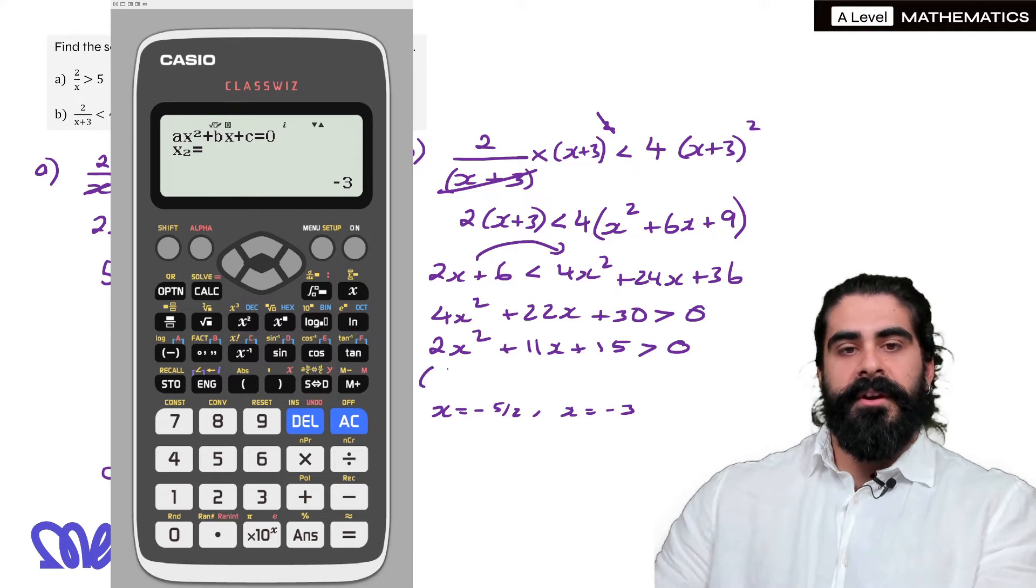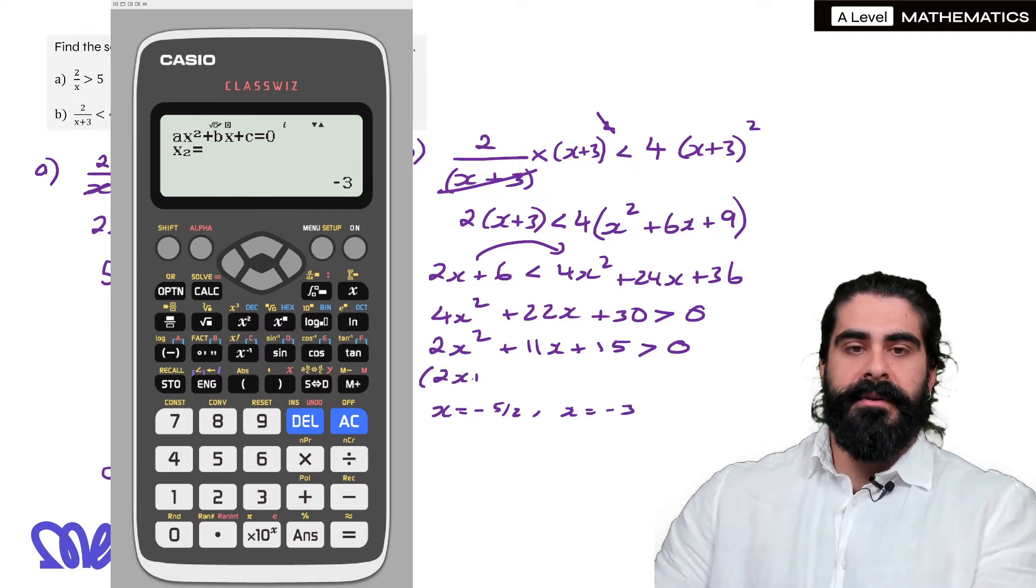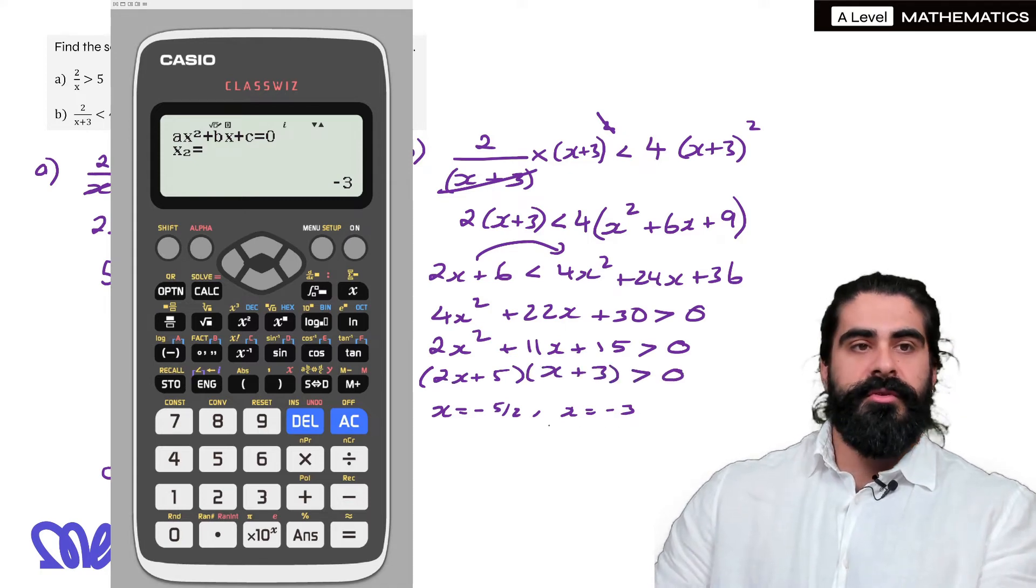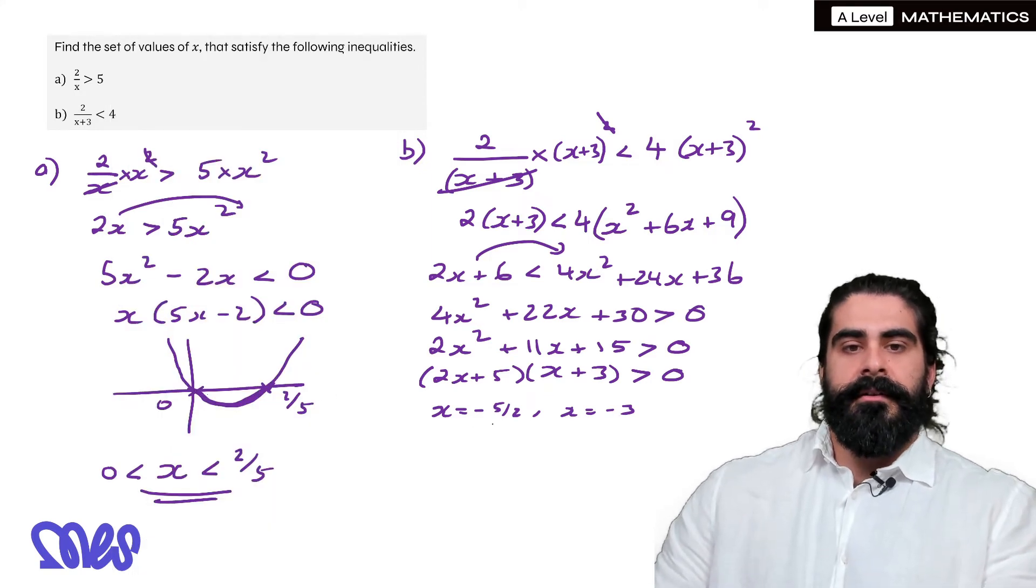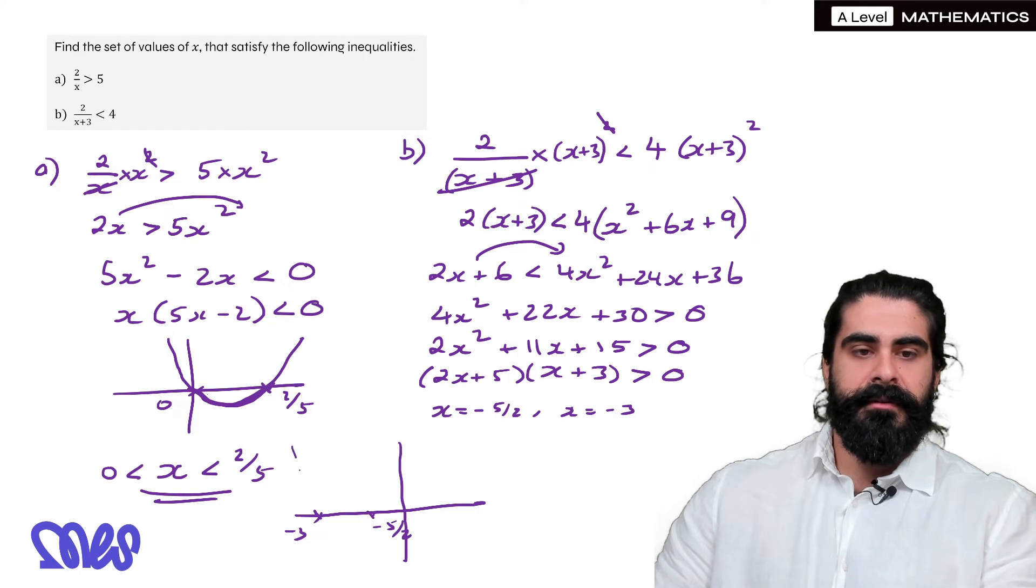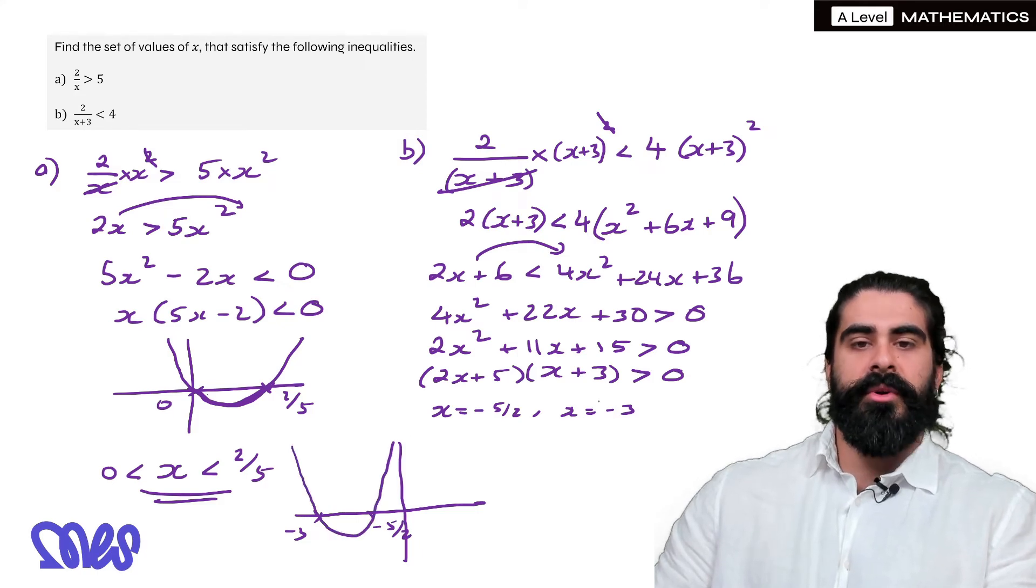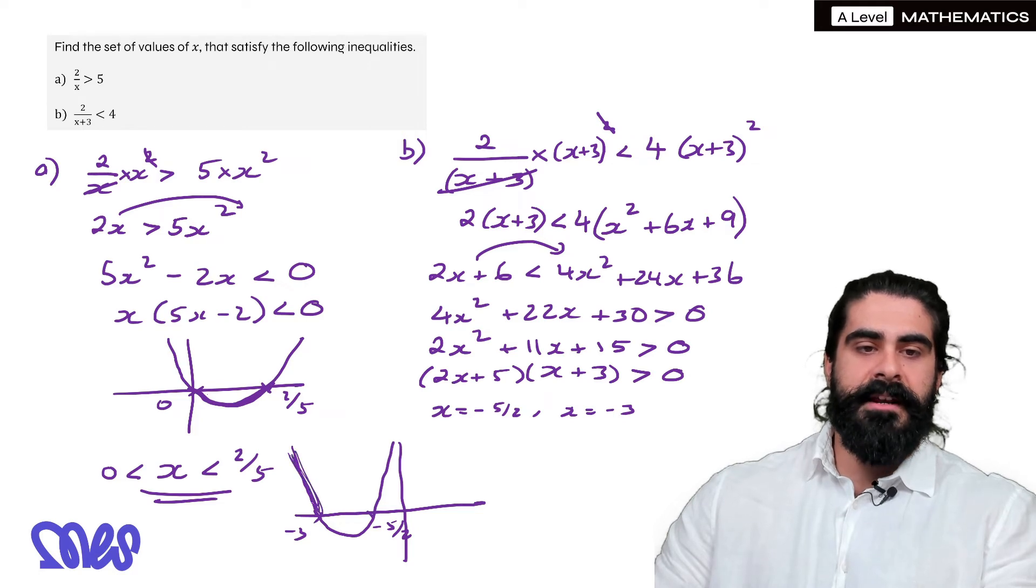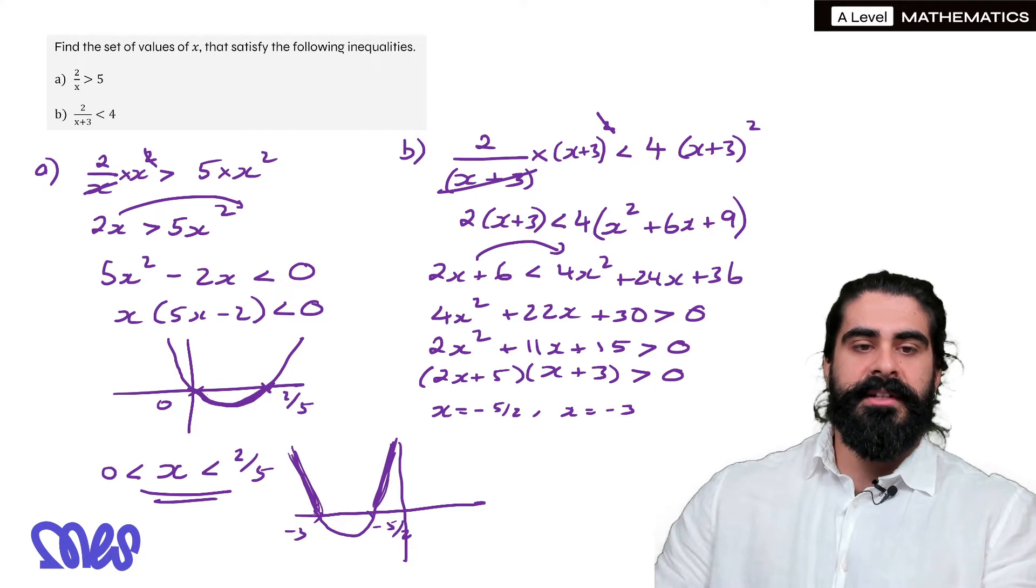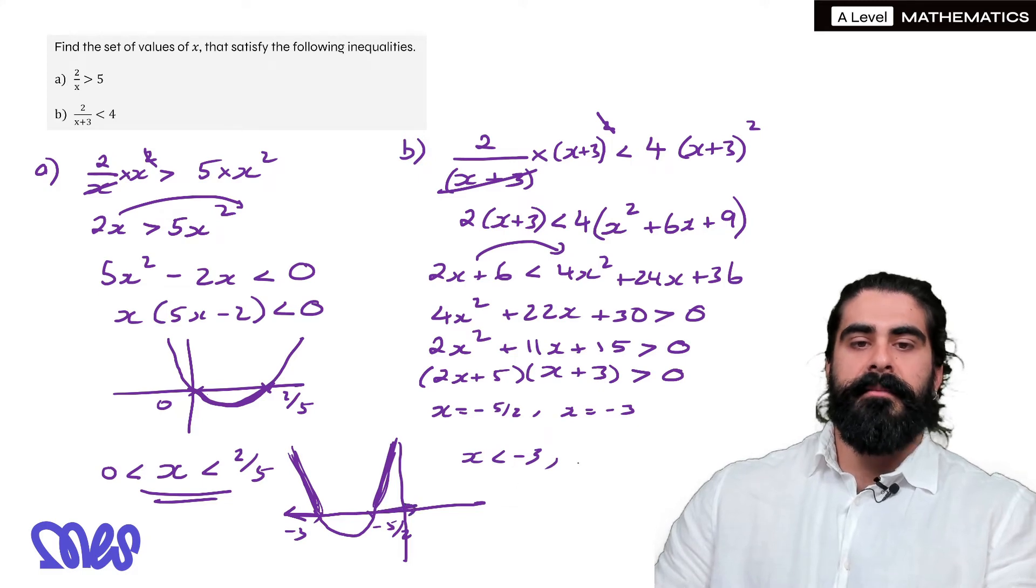What would the factorizing have been there? We would have had 2x plus 5 and x plus 3. So make sure you always show that. Then sketching our graph, we have our roots at minus 3 and minus 5 over 2. And we want to know when is it bigger than 0, so we have the end parts of the quadratic, the parts above 0, above the x-axis. So we can see those x values are less than minus 3 and bigger than minus 5 over 2, to give you your solutions.